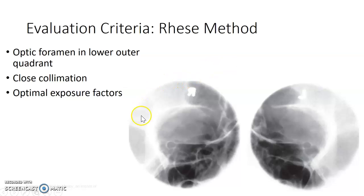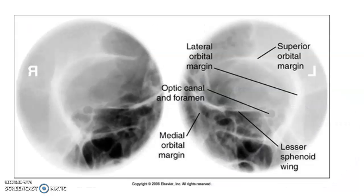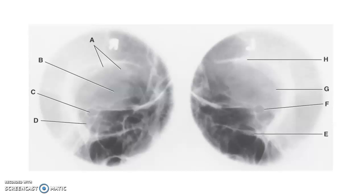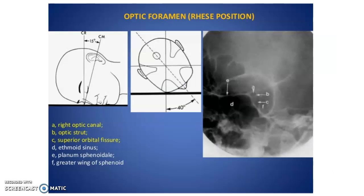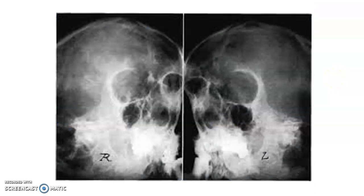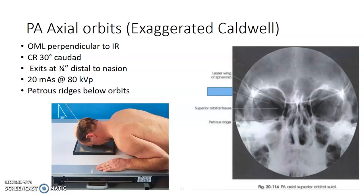For evaluation of the three-point landing, the optic foramen should be in the lower outer quadrant — that's how you evaluate your positioning. Use close collimation. For the PA axial orbits — the exaggerated Caldwell — we know the standard Caldwell is 15 degrees caudal, but this exaggerated Caldwell angle is 30 degrees caudal. The central ray exits three-quarters of an inch distal to the nasion, and the petrous ridges should be just below the orbits.